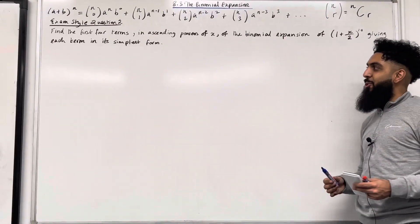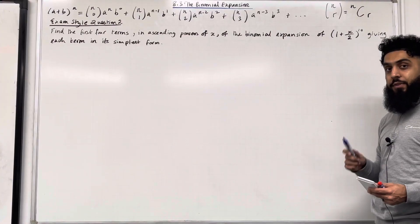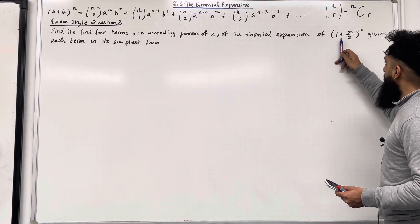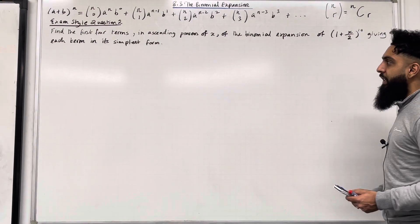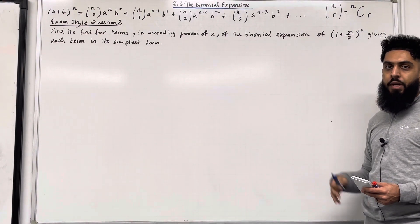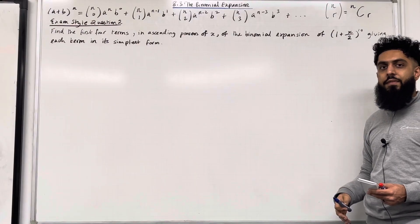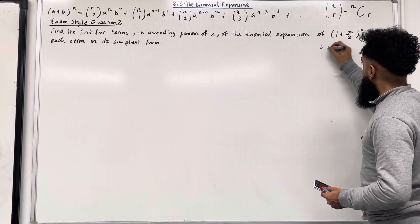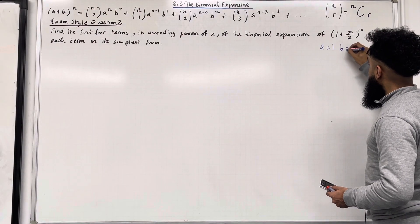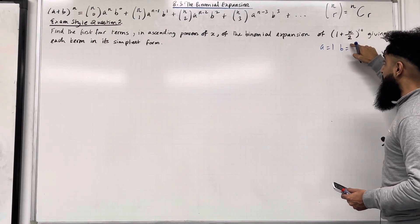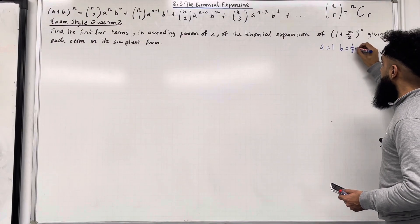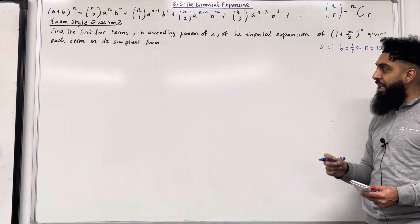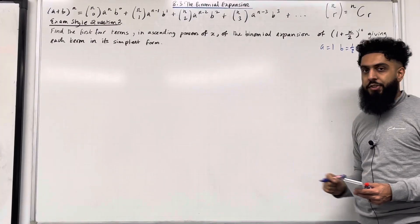Moving on to exam style question 2: find the first four terms in ascending powers of x of the binomial expansion of (1 plus x over 2) to the power 10, giving each term in its simplest form. The first step is to identify the values of a, b, and n. So a is equal to 1, b is equal to x over 2 which can be rewritten as one-half x, and n is equal to 10. We need to substitute a, b, and n into the binomial expansion formula.